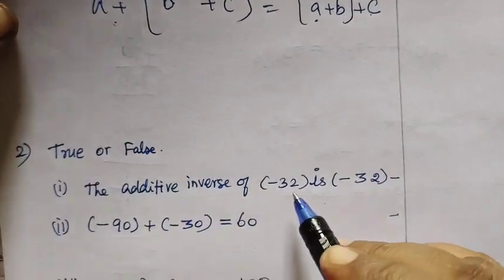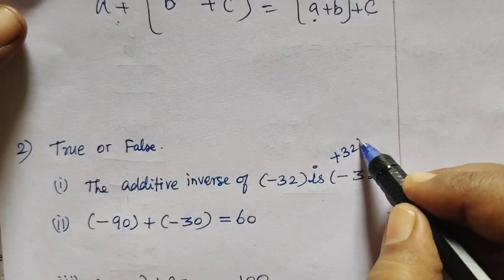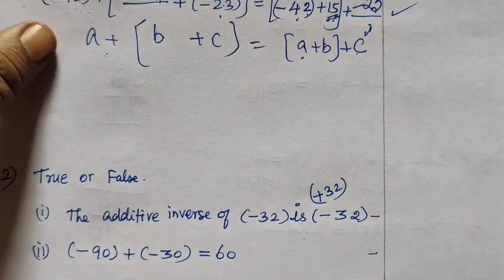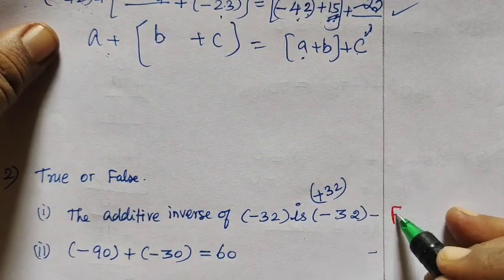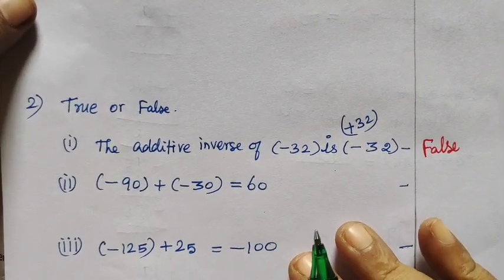True or false? The additive inverse of minus 32 is plus 32. Additive inverse of minus 32 plus 32. But question will be minus 32. So this is false. Plus 32 is true.